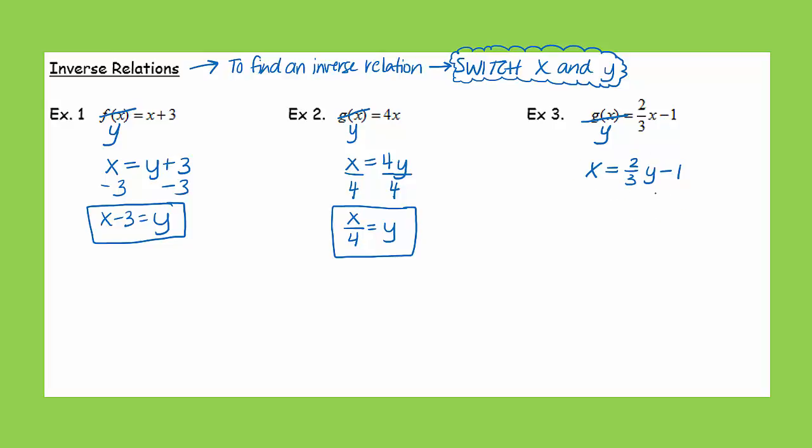So there, I've done the hard part, really, is switching x and y. So I have my relation. That is the inverse. But now I'm going to solve for y. So to get y by itself, I'm going to have to get rid of this negative 1 or the subtracting of 1 here. So I'm going to add 1 to both sides. So now I have x plus 1 equals 2 thirds y.